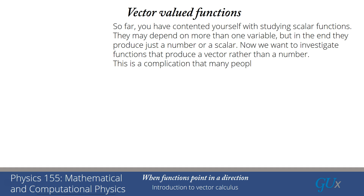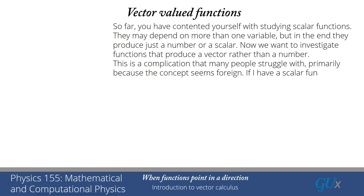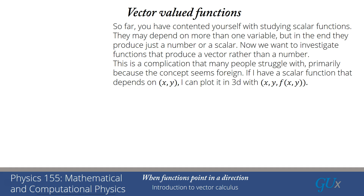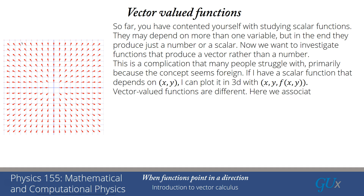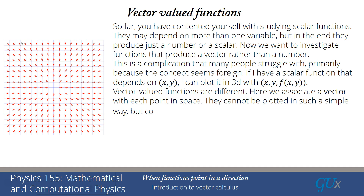This turns out to be a complication that many people struggle with, primarily because the concept simply seems foreign. If I have a scalar function that depends on x and y, I can plot it in 3D as (x, y, f(x,y)), and you've probably seen these kinds of plots. It's much more difficult to visualize a vector-valued function. However, we can do it in 2D rather simply. Because we have a vector at each point in space, we simply plot the vector f(x,y) at the point (x,y).